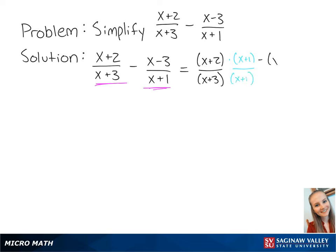Then we're going to multiply negative x minus 3 over x plus 1 by x plus 3 over x plus 3.